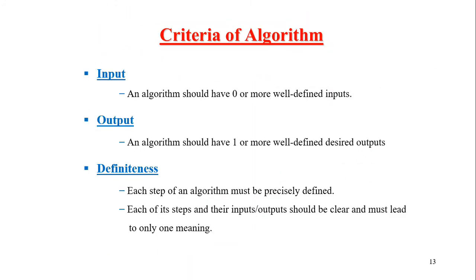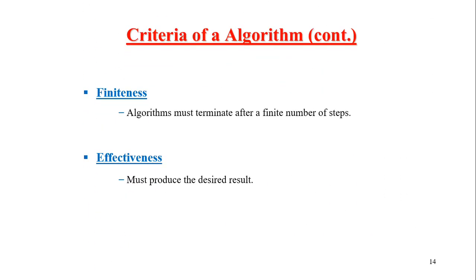In the algorithm there are well-defined inputs. Then the algorithm will have well-defined desired output. The algorithm will be precisely defined — one step will be defined. The algorithm will terminate after a finite number of steps. Finally, effectiveness: the algorithm will produce the desired result.